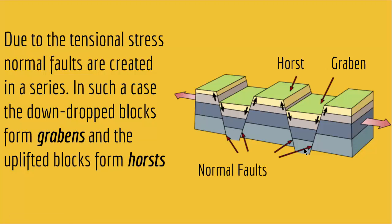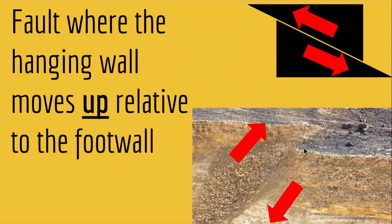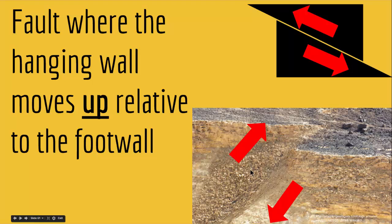In normal faults, the hanging wall moves down and the foot wall goes up. But what if the exact opposite occurs — the hanging wall goes up and the foot wall goes down? We get something called a reverse fault. A reverse fault is a fault where the hanging wall moves up relative to the foot wall. As you can see in this picture, the hanging wall went up while the other part went down. Since the hanging wall went up, this is a reverse fault.